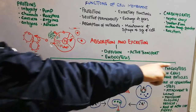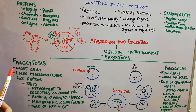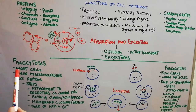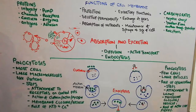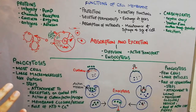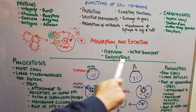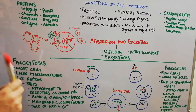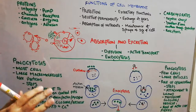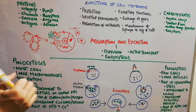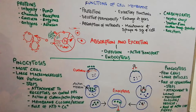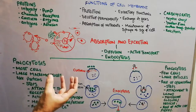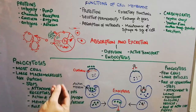Pinocytosis is performed by most cells in the body. Through this method, large macromolecules like proteins go inside the cell. The steps involved in pinocytosis: first, macromolecules will attach to receptors that are concentrated on the plasma membrane at a specific site known as the coated pit. Below the receptors there are proteins known as clathrin.